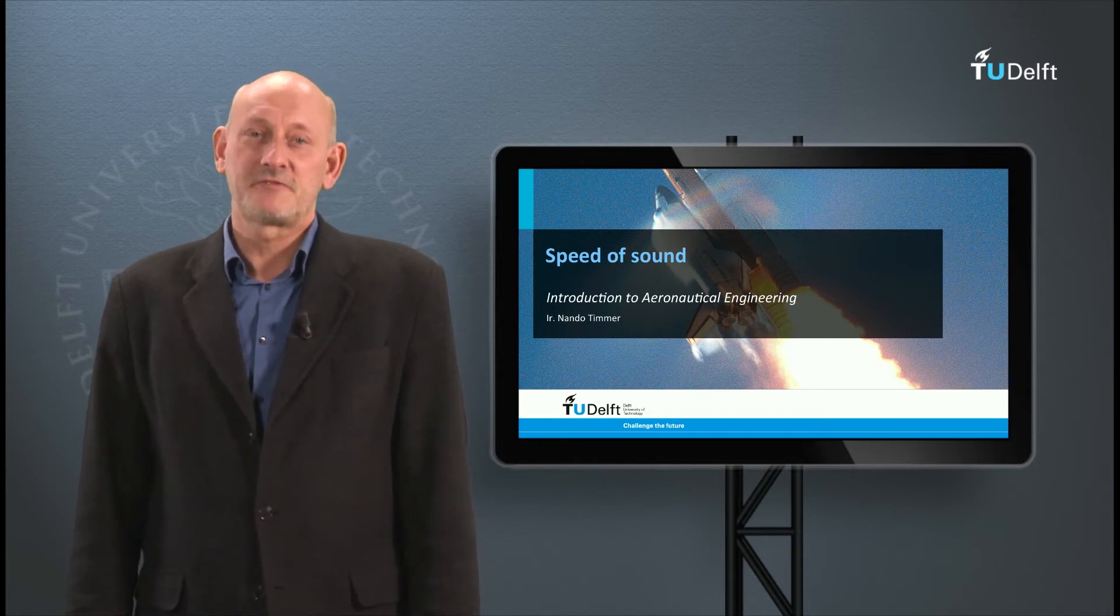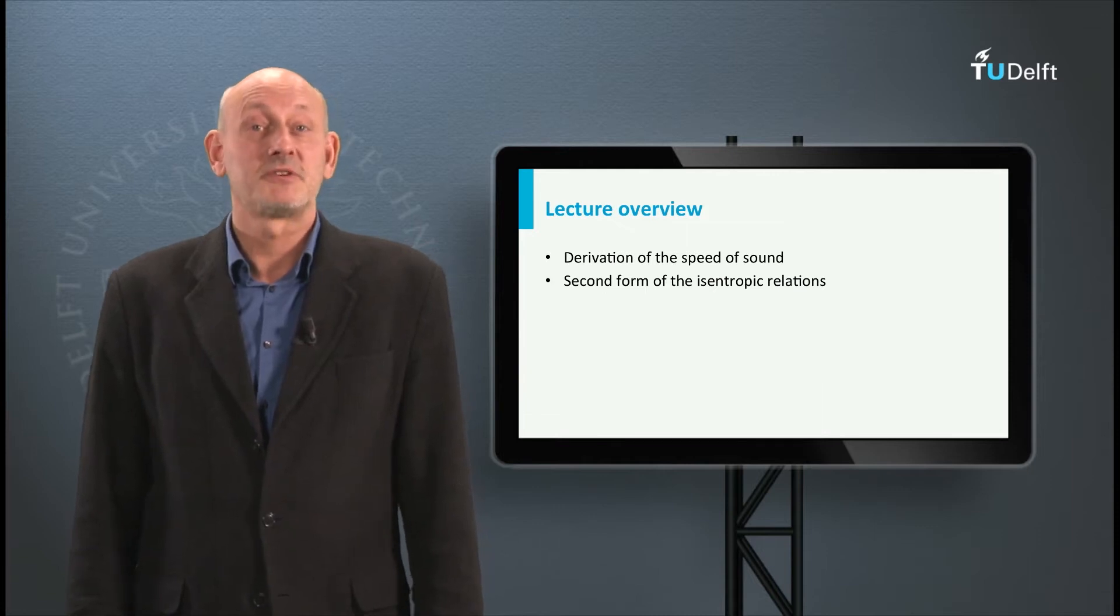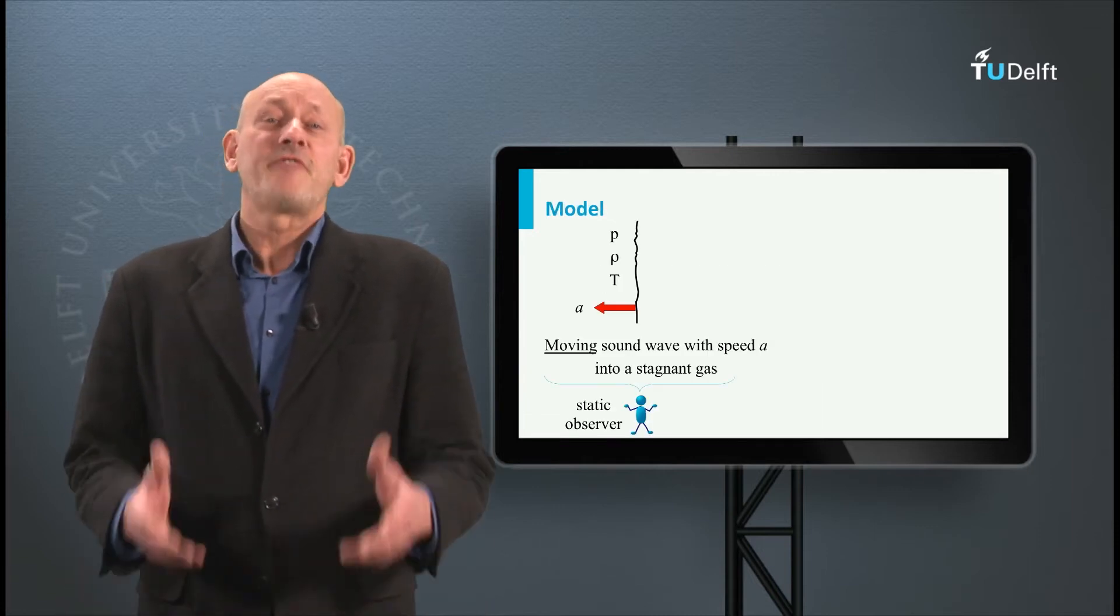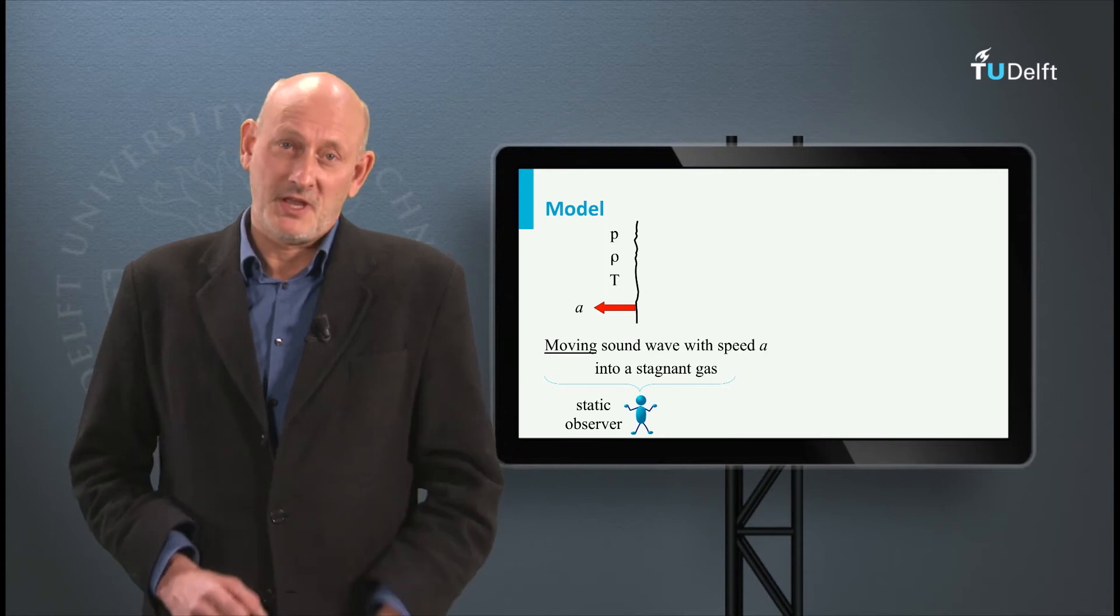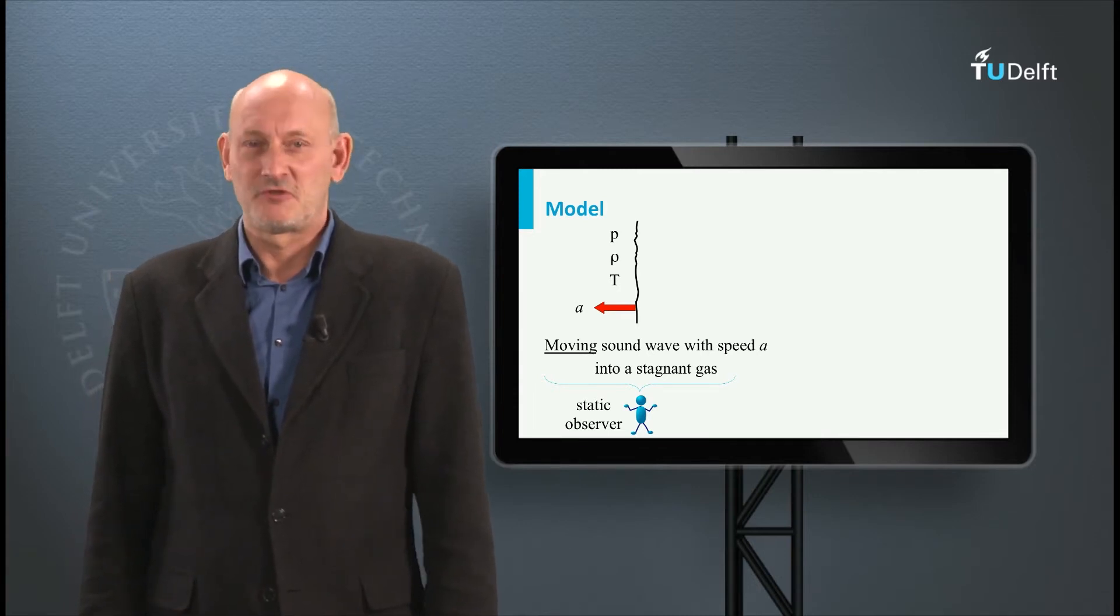This lecture is about the speed of sound and how it relates to the pressure, density and temperature in a gas. To find a relation for the speed of sound A, we use a one-dimensional model of a moving sound wave into a stagnant gas seen from a static observer.